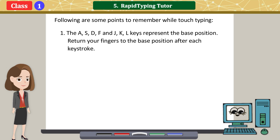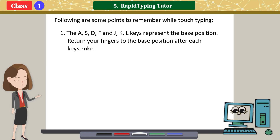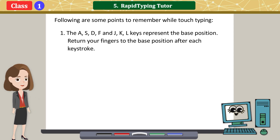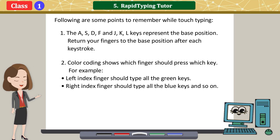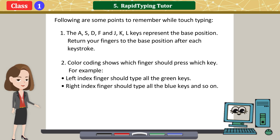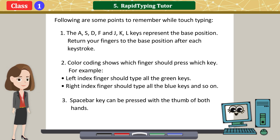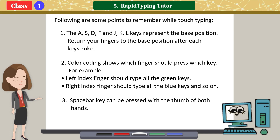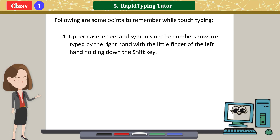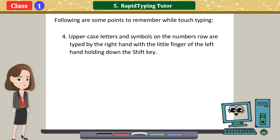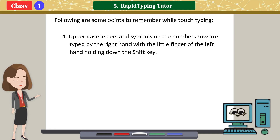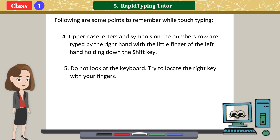The A, S, D, F and J, K, L keys represent the base position. Return your fingers to the base position after each keystroke. Color coding shows which finger should press which key. For example, the left index finger should type all the green keys. The right index finger should type all the blue keys, and so on. The space bar key can be pressed with the thumb of both hands. Uppercase letters and symbols on the numbers row are typed by the right hand with the little finger of the left hand holding down the Shift key. Do not look at the keyboard.